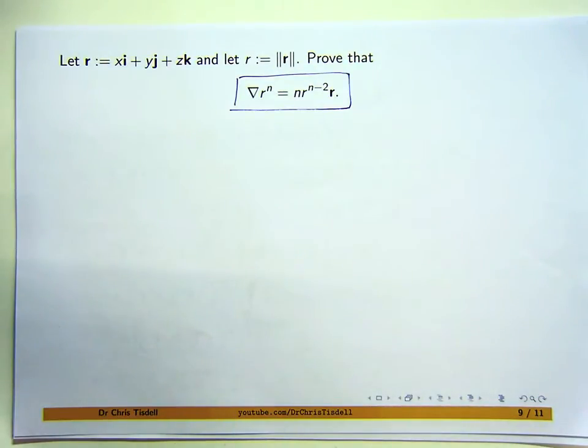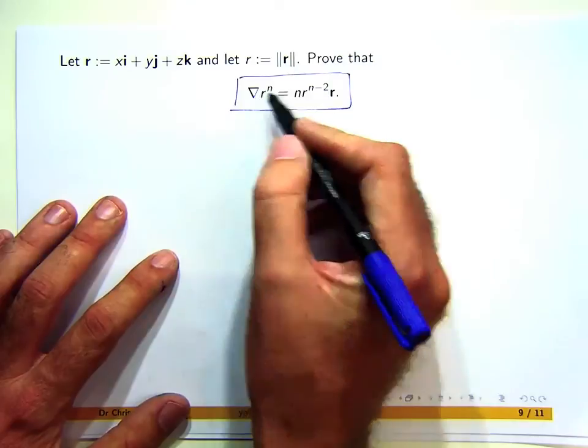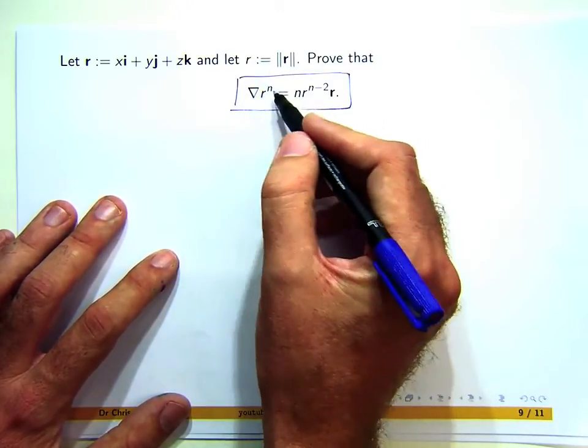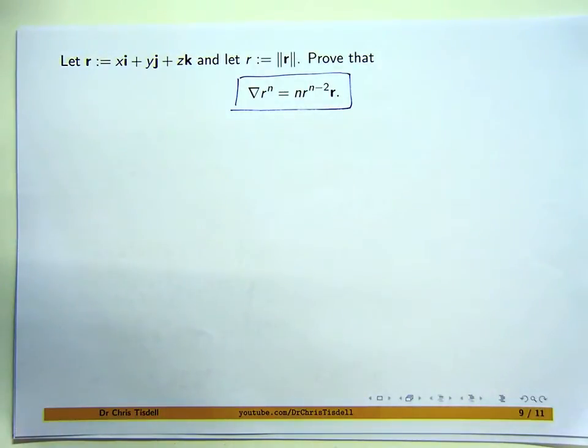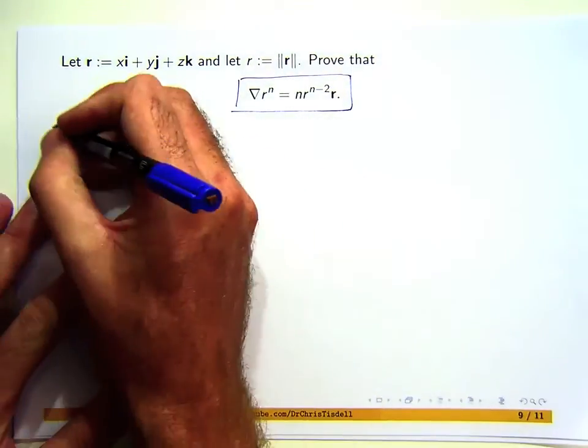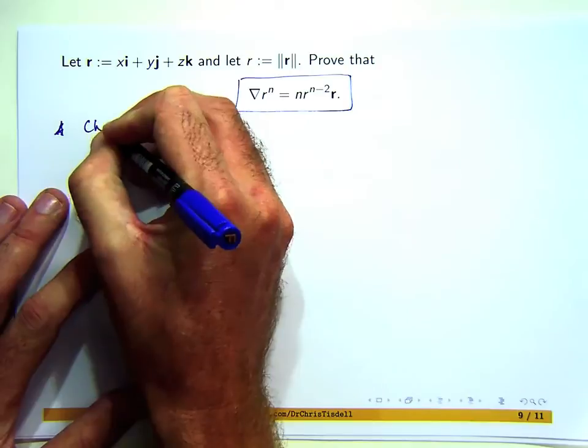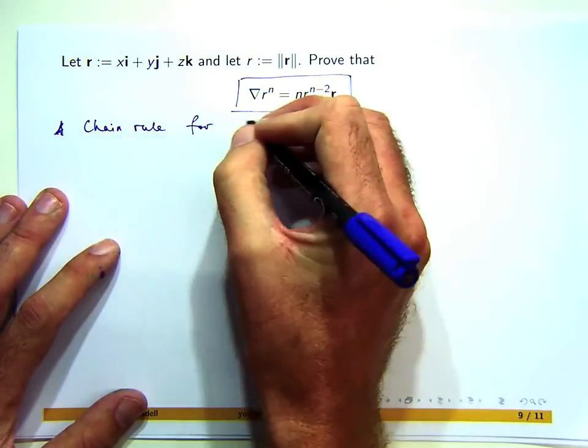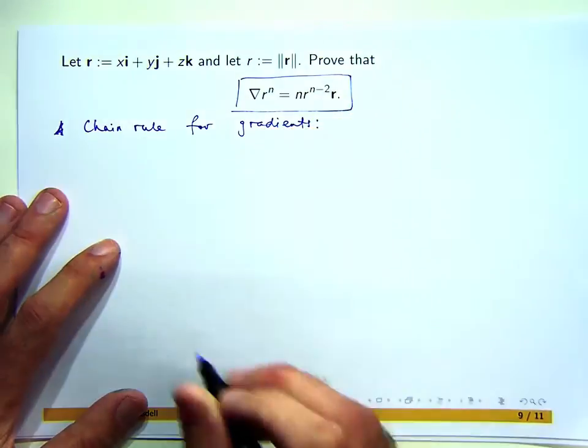So now I'm going to show you a way to do this problem using the chain rule for gradients. You don't have to use this method, but you might like it. So you can see in here that basically I'm taking the gradient of r, which is a function, to the power n. So I've got two functions here. I've got a function of a function. I've got the function r and the power function to the power n. So we know if gradient is a bit like a derivative, then with composition of functions, I know sometimes I can use the chain rule. So there is a chain rule for gradients, and I just wanted to share that with you.